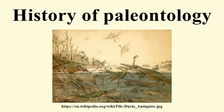In 1027, the Persian naturalist Ibn Sina proposed an explanation of how the stoniness of fossils was caused in the Book of Healing. He modified an idea of Aristotle's, which explained it in terms of vaporous exhalations. Ibn Sina modified this into the theory of petrifying fluids, which was elaborated on by Albert of Saxony in the 14th century and was accepted in some form by most naturalists by the 16th century.